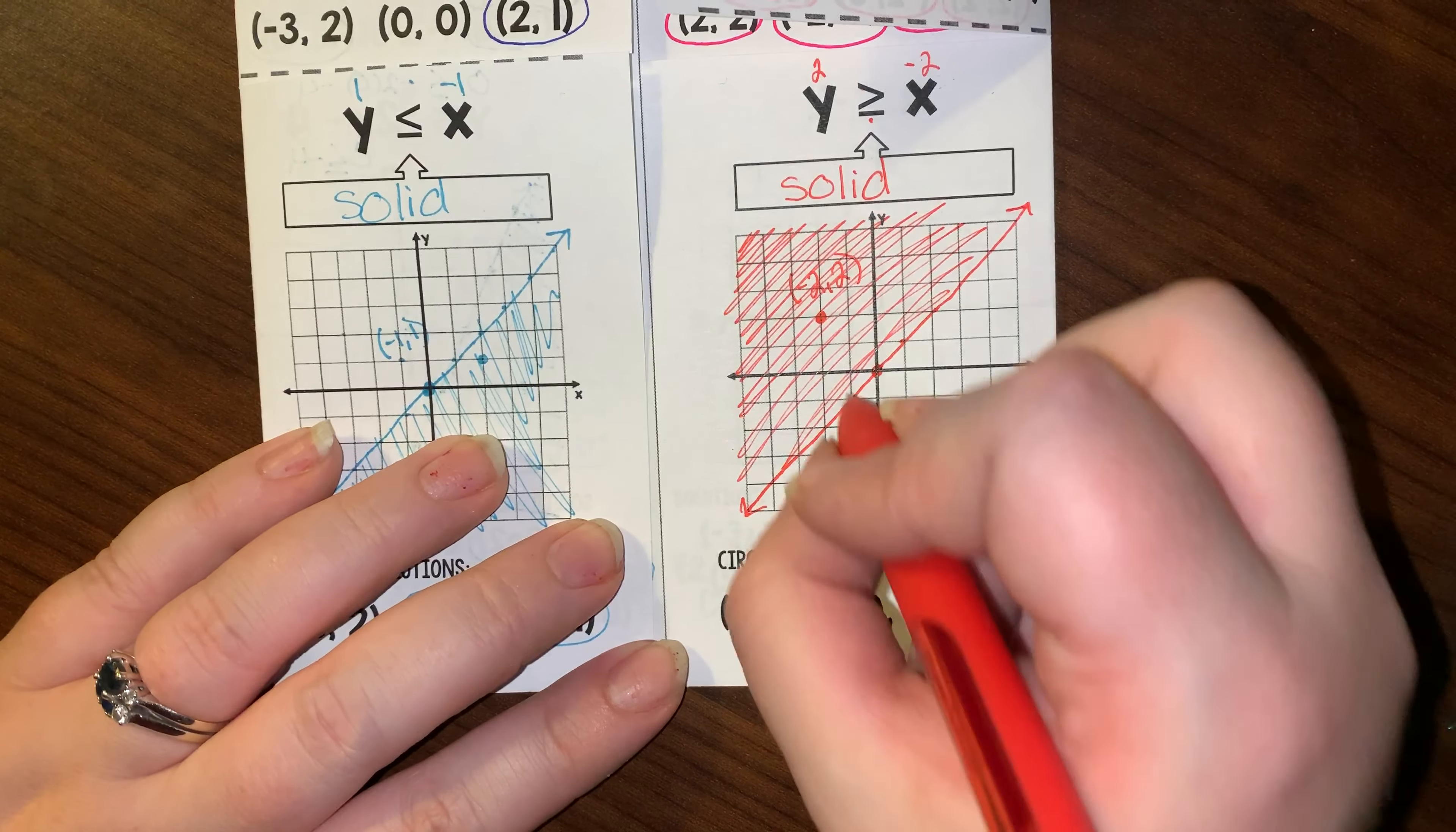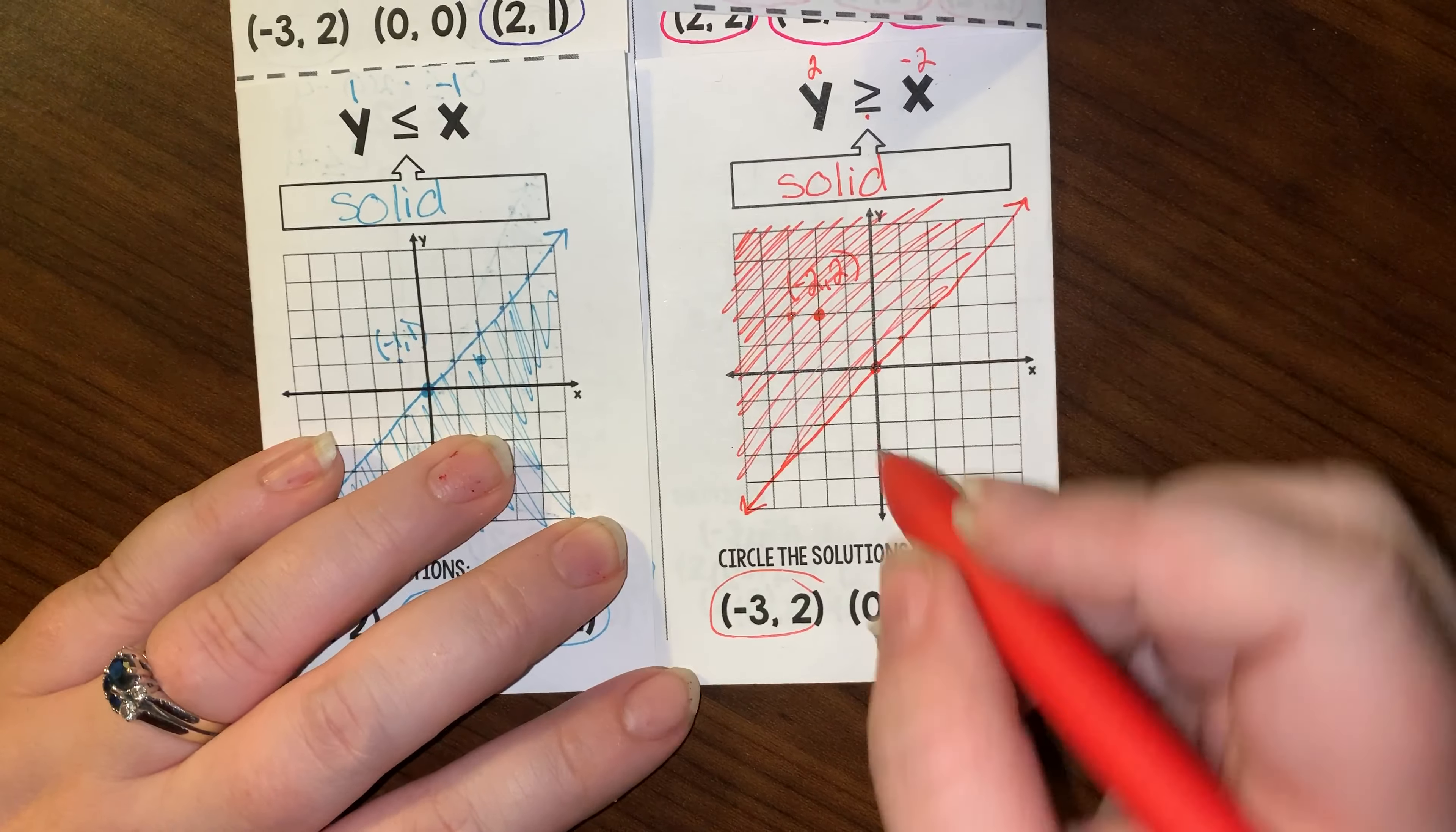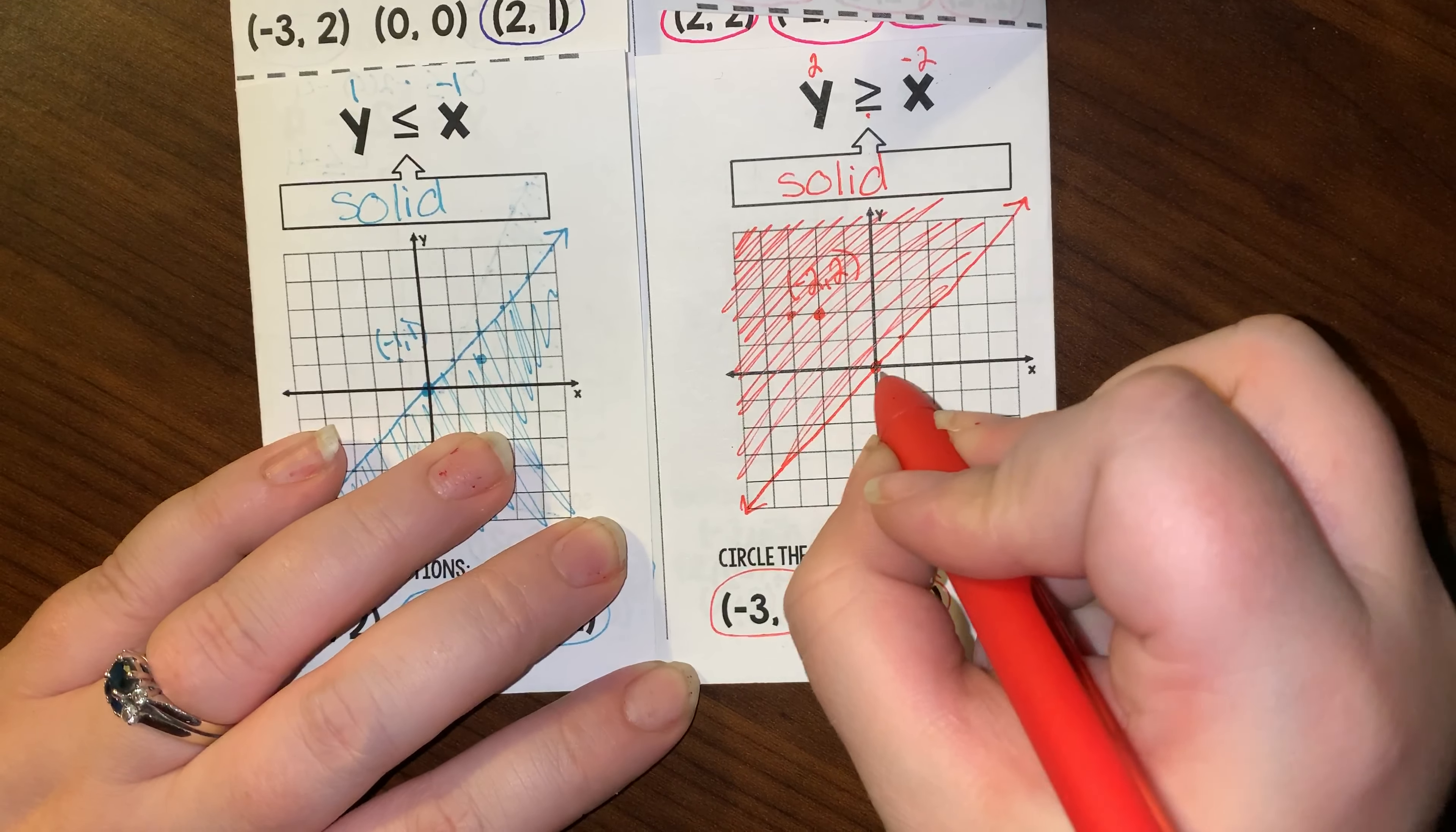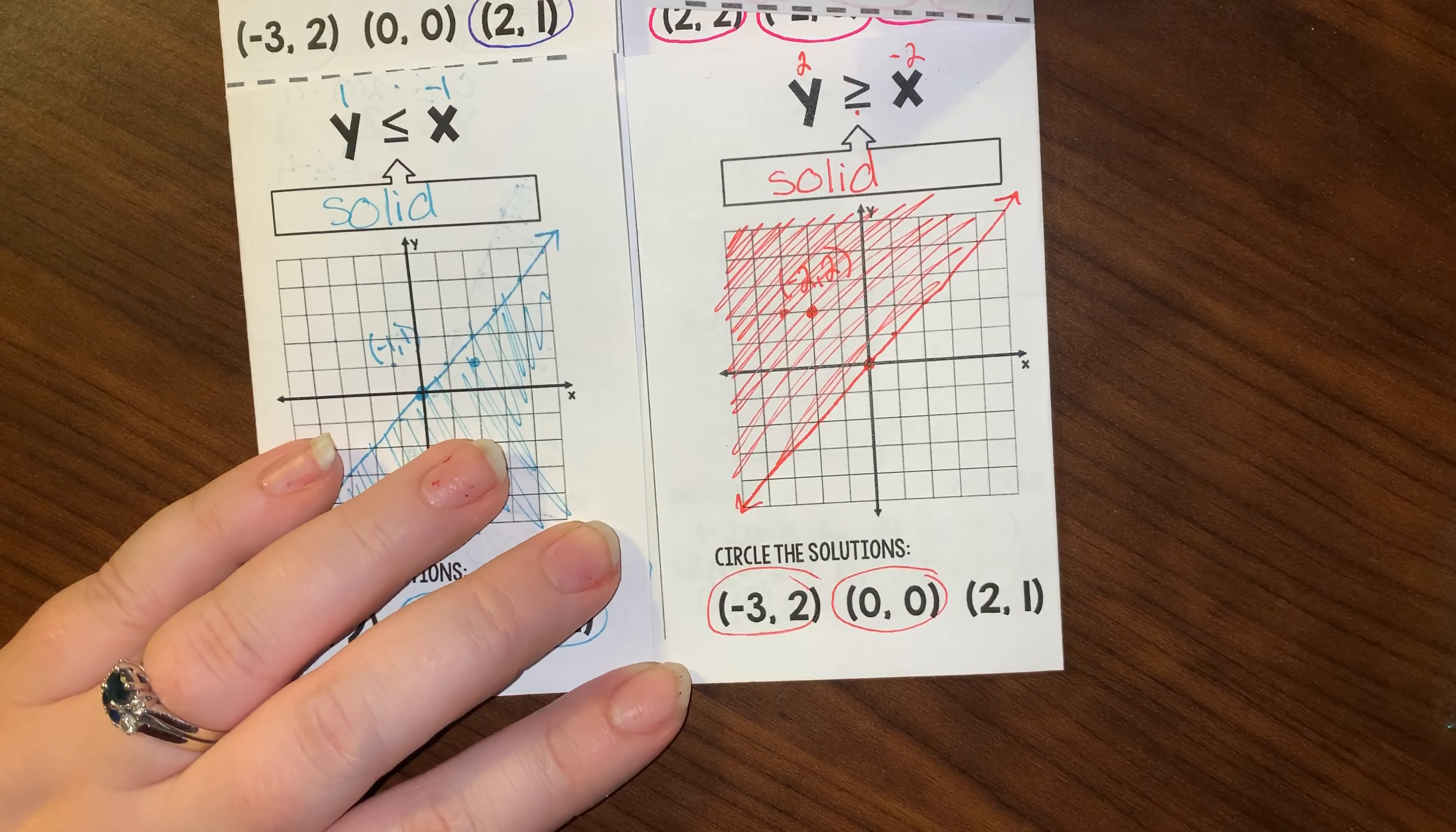And for our possible solutions, negative 3, 2 definitely works. 0, 0 is on the line and because it's a solid line, that is a possible solution. And 2, 1 is not within that shaded region, so that is not a solution.